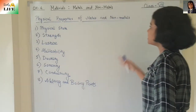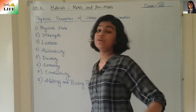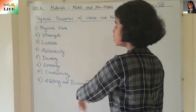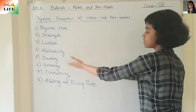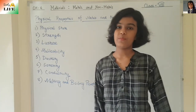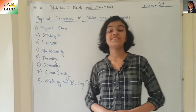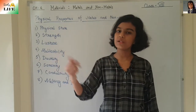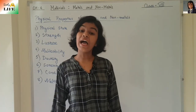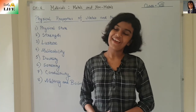These were the physical properties of metals and non-metals: physical state, strength, luster, malleability, ductility, sonority, conductivity, and melting and boiling points. In the next video, I will cover chemical properties of metals and non-metals. If you liked this video, click the like button, subscribe, and stay with me. Thank you.